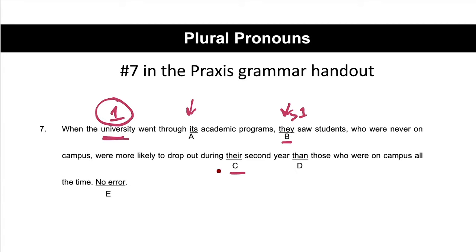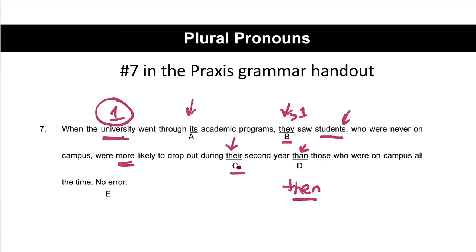I want to check the other parts to make sure I'm on the right track. 'They saw students who were never on campus were more likely to drop out during their second year' — we have another plural pronoun 'their,' but here it's talking about students, which is plural, so that's okay. Then 'more likely' has to go with 'than,' and than is correct. A lot of people mix up then and than — then indicates time, than indicates a comparison. So D is fine, C is fine. The problem is B with 'they.'